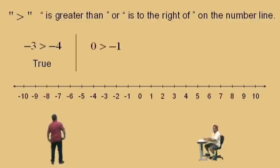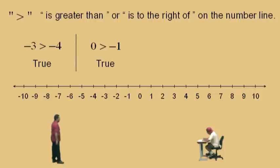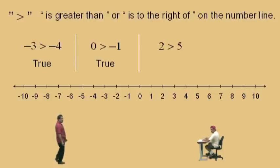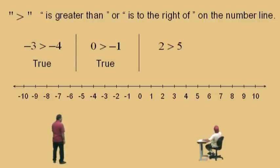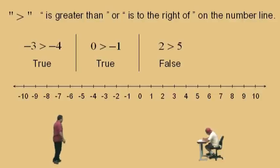Here we go, Charlie. Is 0 greater than negative 1? Yes, it is, because 0 is to the right of negative 1. 0 is the bigger number. Let's do another one. Is 2 greater than 5? No, it's not. So that statement, 2 greater than 5, is a false statement. It's not true. 2 is actually less than 5. We'll get to that in a second.